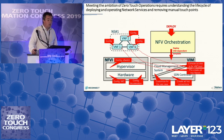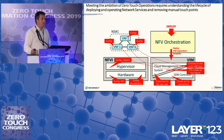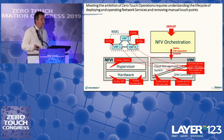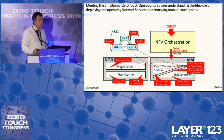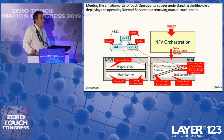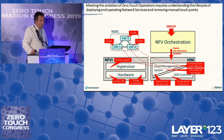Meeting the ambition of zero-touch operations requires understanding very well the lifecycle of deploying and operating network services and removing all sorts of manual touchpoints. In real life right now, if you don't have something like OSM, you need to deploy the different virtual machines, and you will have a lot of different manual touchpoints to make the final service ready to be used. You can see these different red boxes that represent the different manual touchpoints.